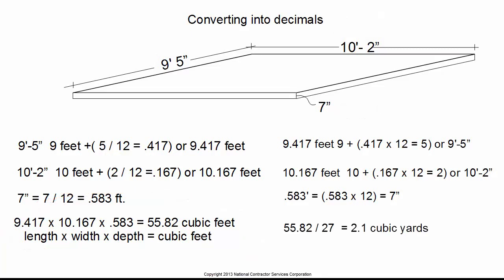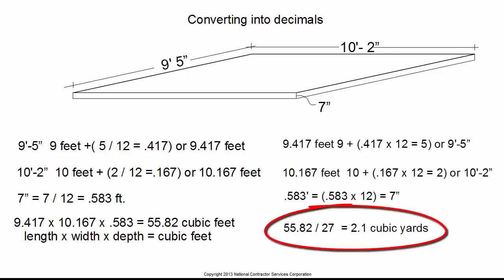A cubic yard contains 27 cubic feet, which is a cube 3 feet wide by 3 feet tall by 3 feet deep. Dividing the total cubic feet, 55.82, by 27 cubic feet gives us 2.1 cubic yards.